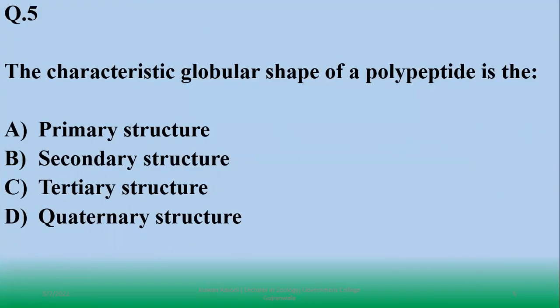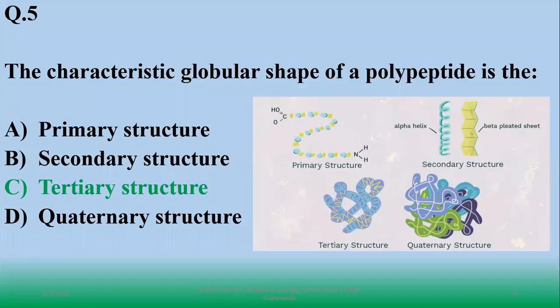The characteristic global shape of a polypeptide is basically tertiary structure if it is single polypeptide chain. If it is more polypeptide chains, it will be quaternary. So here is single polypeptide, so right option is tertiary level.